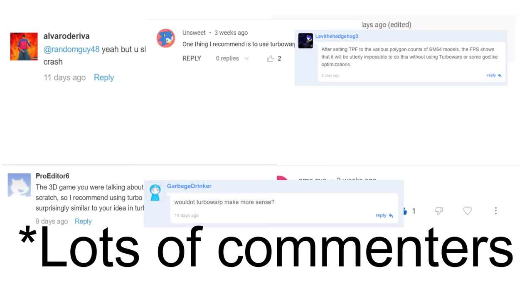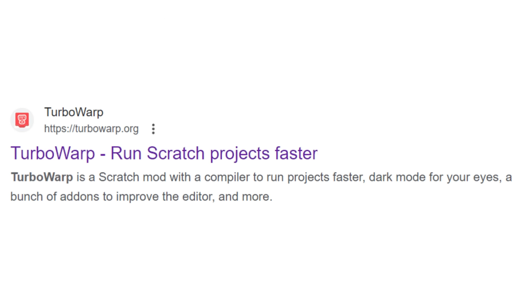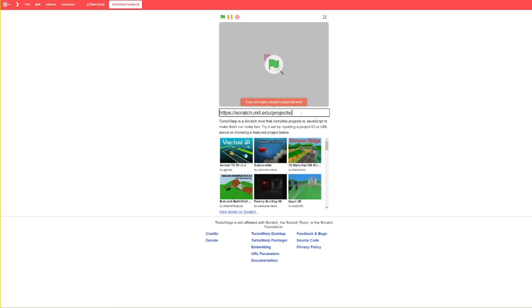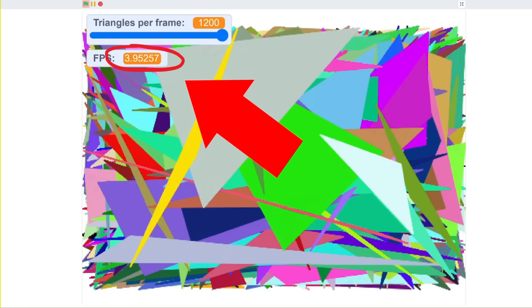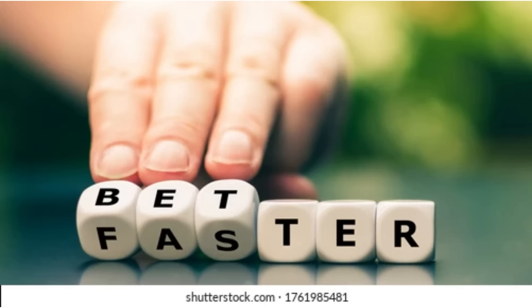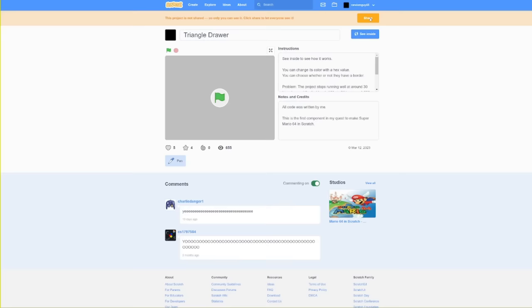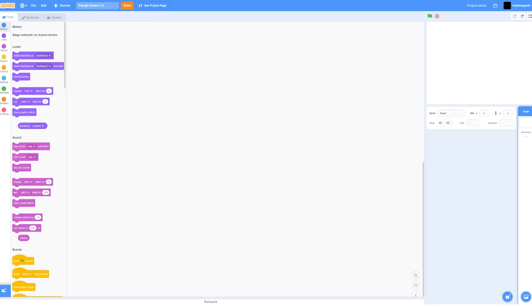A commenter on Scratch recommended that I use TurboWarp, an online Scratch extension that can run Scratch projects faster. TurboWarp can run 1000 triangles at almost 4 FPS, but I want my game to be faster and not dependent on TurboWarp. So I uploaded my triangle drawer and began on a new idea.